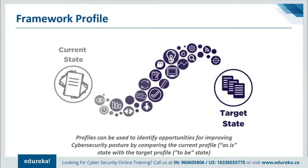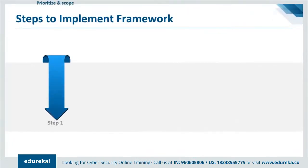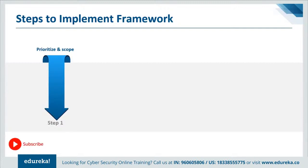The following steps illustrate how an organization could use the framework to create a new cybersecurity program or improve on an existing program, and should be repeated to continually improve cybersecurity. Step one is to prioritize and scope: the organization identifies its business and mission objectives and high-level organizational priorities. With this information, the organization makes strategic decisions regarding cybersecurity implementations and determines the scope of systems and assets that support the selected business line or process. The framework can be adapted to support different business lines with different risk tolerances.